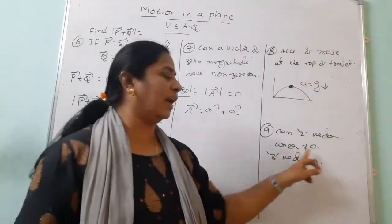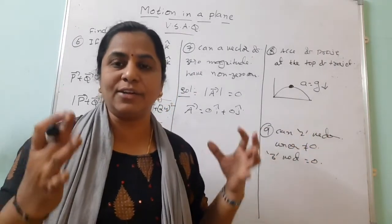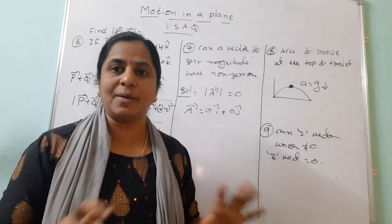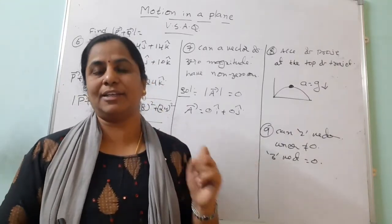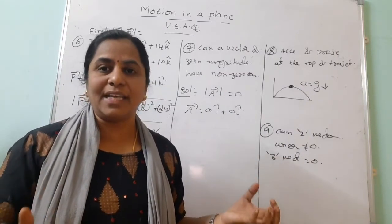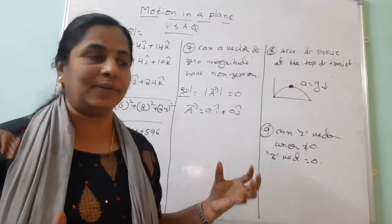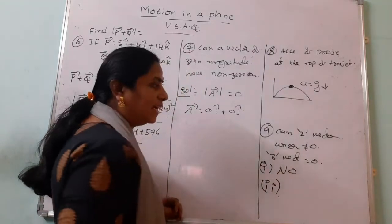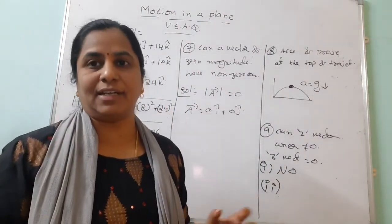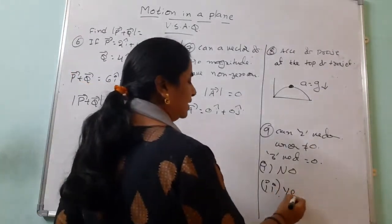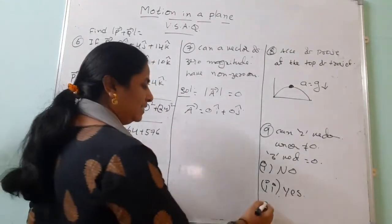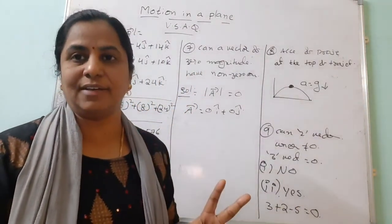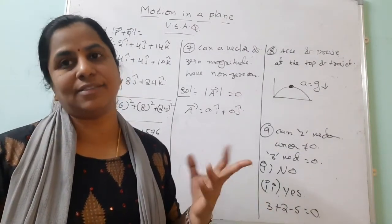The ninth VSAQ has two parts. First, can two unequal vectors add to give a zero vector? No — for example, 2 + (−3) = −1, not zero. Second, can three unequal vectors add to give zero? Yes — for example, 3 + 2 + (−5) = 0. So two unequal vectors cannot yield a zero resultant, but three unequal vectors can.